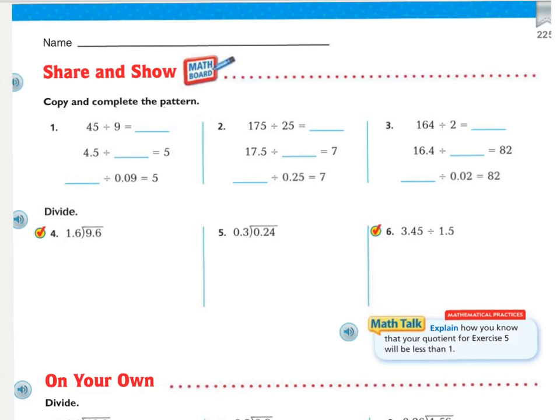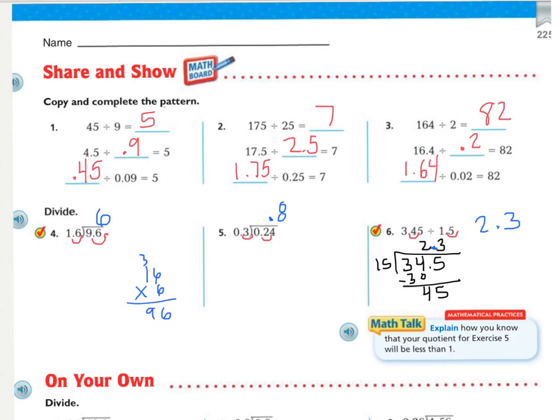In your Share and Show, numbers 1, 2, and 3, they just want you to complete the pattern. How many times has the decimal been moved? Fill in the blanks. And then 4, 5, and 6, they want you to just find your quotient. After you've finished, if you got them all correct, fill out your exit ticket, and then work on the On Your Own and the problem solving. If you made a mistake, look back and see if you can find where your mistake is. If you are still confused, please raise your hand and ask for help.